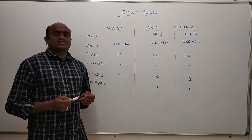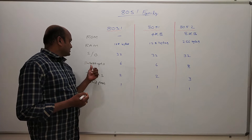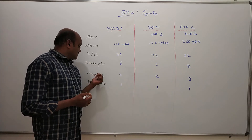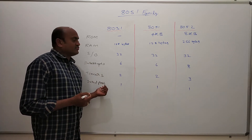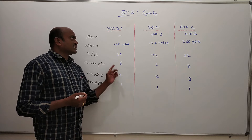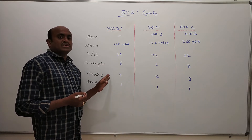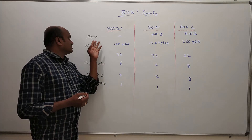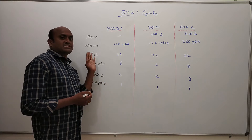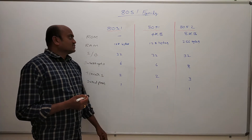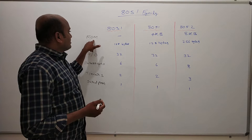The six parameters are: ROM memory, RAM memory, IO devices, interrupt sources, timers, and serial ports. We will see how many of each of these six parameters are available for each type of device. If you look at the first one, the ROM memory of the 8031 is...